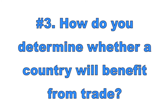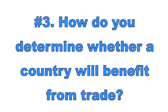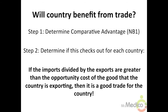Number three: how do you determine whether a country will benefit from trade? To determine whether two countries should specialize in trade, use the law of comparative advantage, also known as the Ricardian model. Simply look at the opportunity cost of production — the country with the lowest relative opportunity cost will specialize in the production of that good and export it.